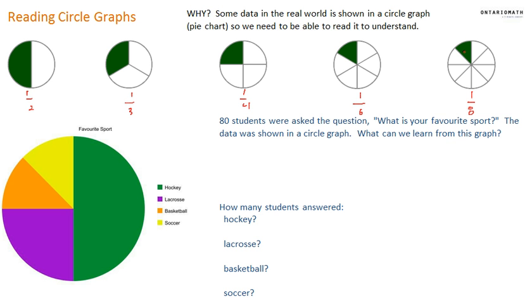1 eighth is half of what a quarter would look like. 1 sixth looks like that, and it's also half of what a third would look like. And if I chopped it down to the middle, it would look like a sixth. A quarter is also a half of a half. So we're using this information and understanding what each fraction looks like to help us answer the question.